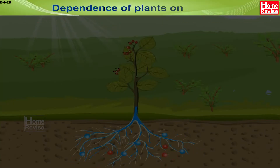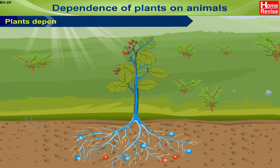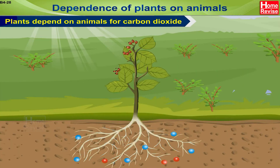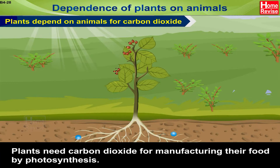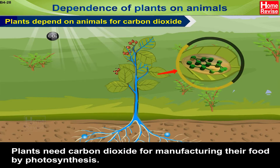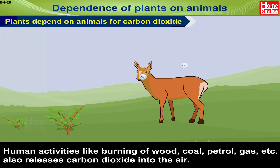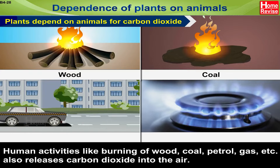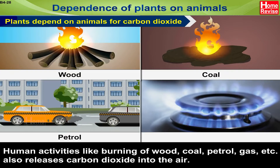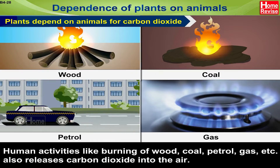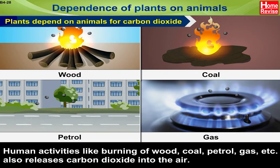Dependence of Plants on Animals. Plants depend on animals for Carbon Dioxide. Plants need Carbon Dioxide for manufacturing their food by Photosynthesis. Animals release Carbon Dioxide into the atmosphere through respiration. Human activities like burning of Wood, Coal, Petrol, Gas, etc. also release Carbon Dioxide into the air.